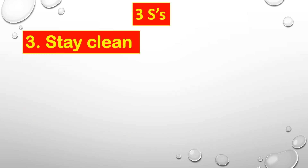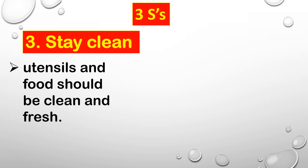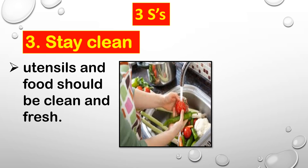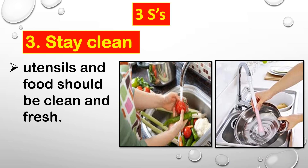The last S is stay clean — utensils and food should be clean and fresh. For example, when cooking vegetables, you need to wash them properly. Just like fruit, before eating it, wash it properly to remove the germs. Also, wash the pots or utensils that you use when cooking.